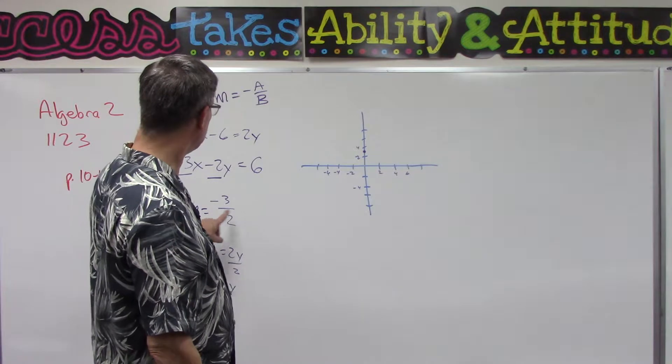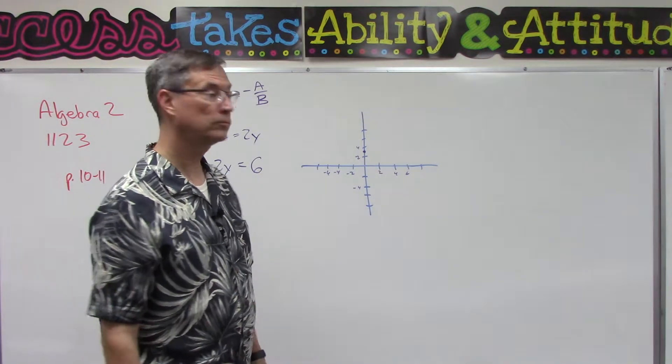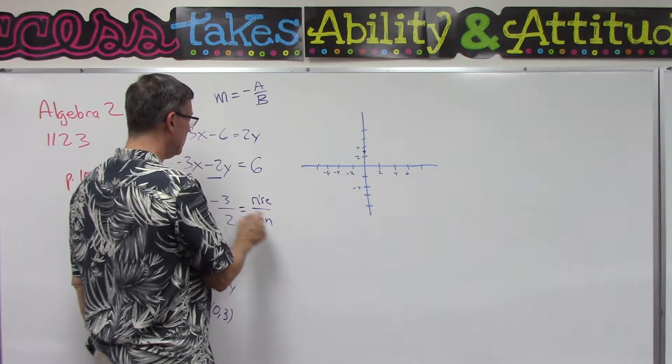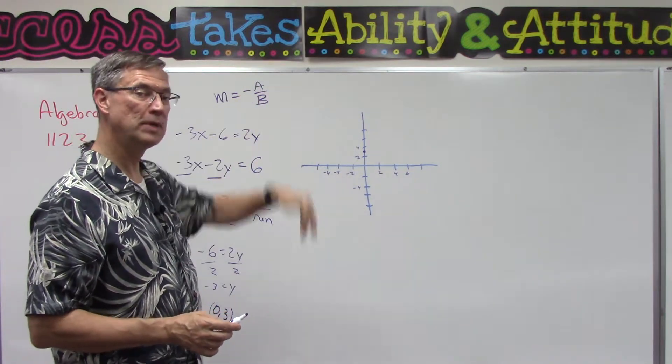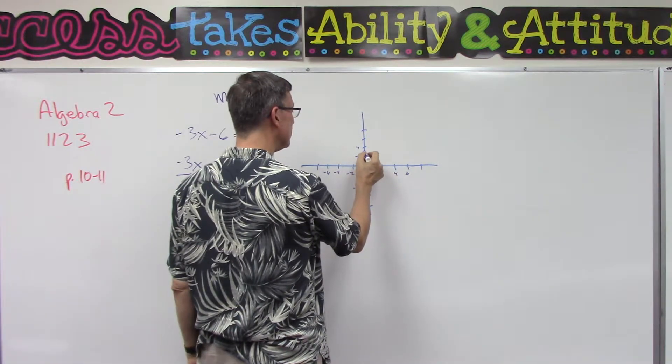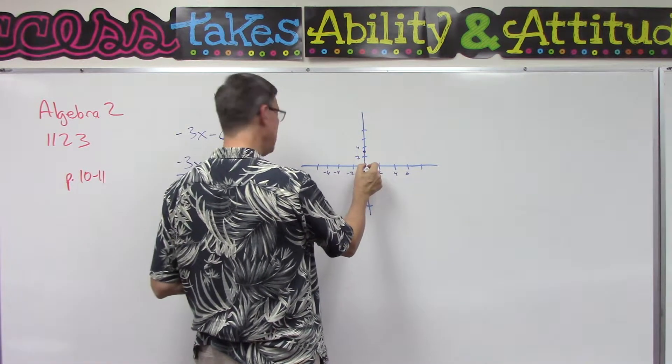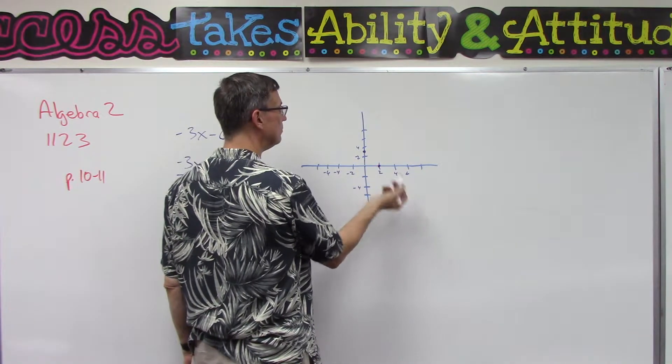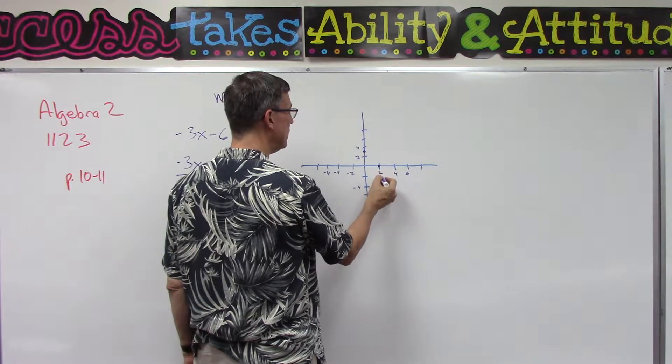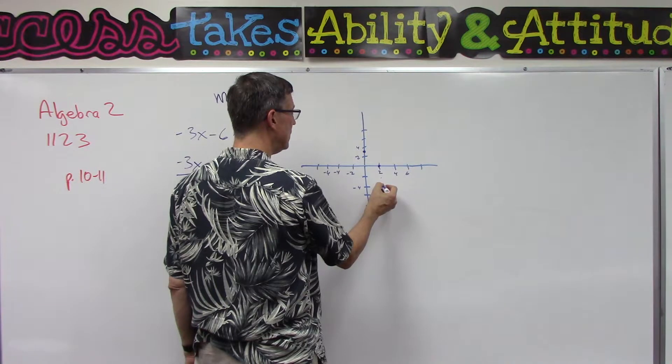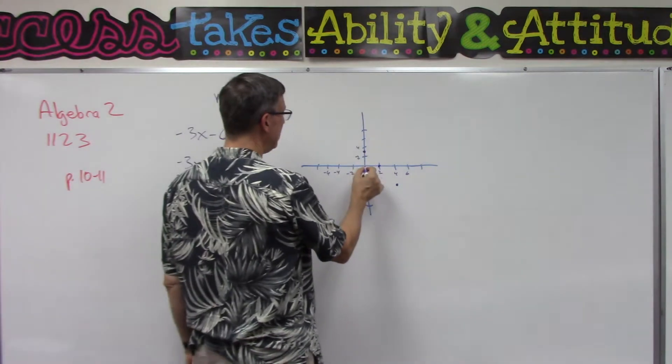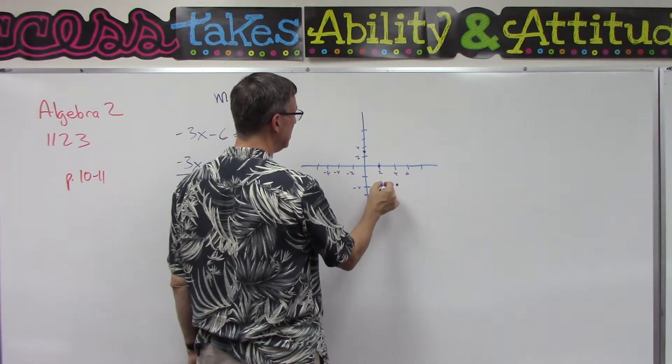Then it tells us that the slope is negative 3 over 2. What that means, remember, is rise over run. The negative 3 means I'm either going to go up 3 or down 3. Because it's negative, I'm going to go down 3 from that point—1, 2, 3—and then the run is 2, so I go over 2. I could actually graph another point now by going down from here 1, 2, 3, and then go over 2 more. Down 3, over 2. Down 3, over 2.